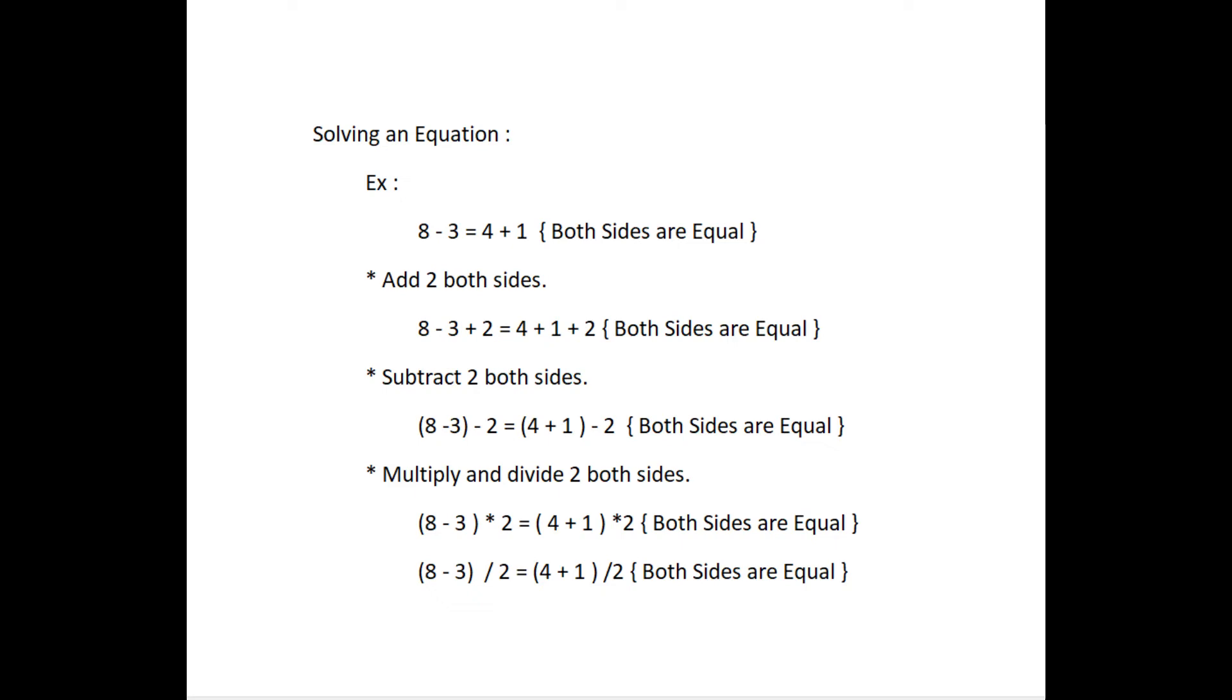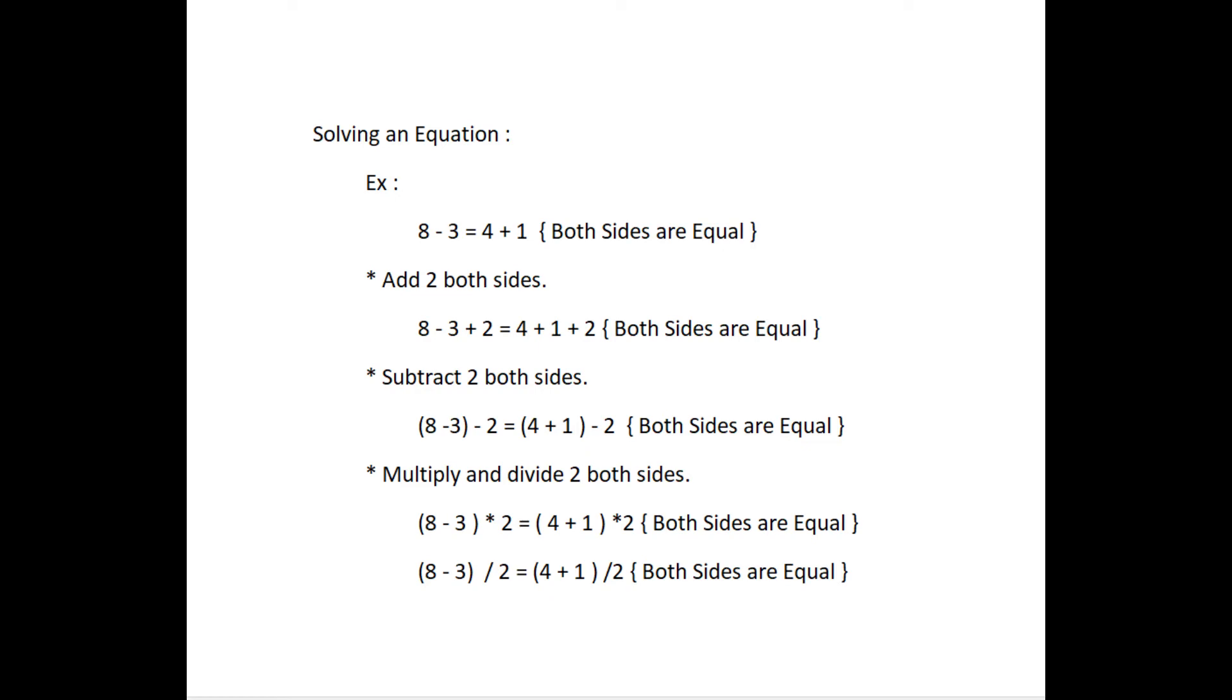For example, 2 into 8 minus 3 equal to 2 into 5 equal to 10. 2 into 4 plus 1 equal to 2 into 5 equal to 10. For division, 8 minus 3 divided by 2 equal to 5 divided by 2. Both sides are equal.